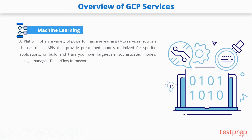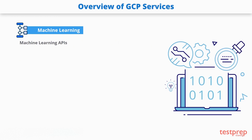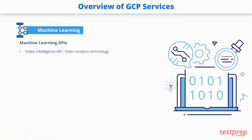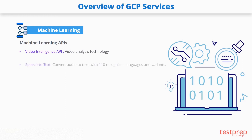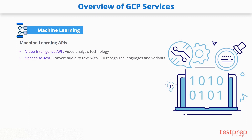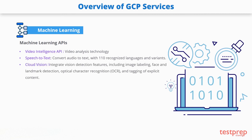Google's AI Platform offers a variety of powerful machine learning services. You can use APIs with pre-trained models optimized for specific applications, or build and train your own large-scale sophisticated models using a managed TensorFlow framework. The Video Intelligence API provides video analysis including label detection and explicit content detection. Speech-to-Text lets you convert audio to text with 110 recognized languages and variants, transcribe through a microphone, or enable voice command and control. Cloud Vision lets you integrate vision detection features including image labeling, face and landmark detection, optical character recognition, and tagging of explicit content.